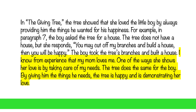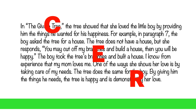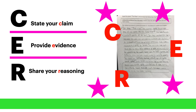Here's how this could look in our example. I know from experience that my mom loves me. One of the ways she shows her love is by taking care of my needs. The tree does the same for the boy — by giving him the things he needs, the tree is happy and is demonstrating her love. The reasoning tells how the evidence supports the claim; they work together to make a complete and well-rounded answer. Any time you're asked to give a short answer response, make sure and proofread your paragraph by going back through and making sure you have all of the components to ensure your answer is complete and thorough. Thanks for watching.